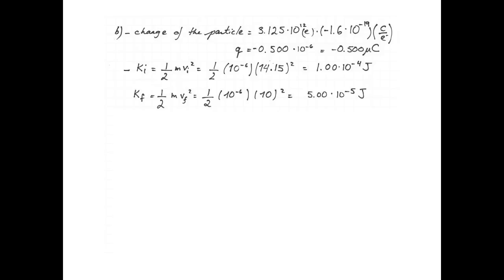The final kinetic energy of the particle is one half multiplied by the mass, multiplied by the final speed squared, and that's 5 times 10 to the negative 5 joules, or 0.5 times 10 to the negative 4 joules.